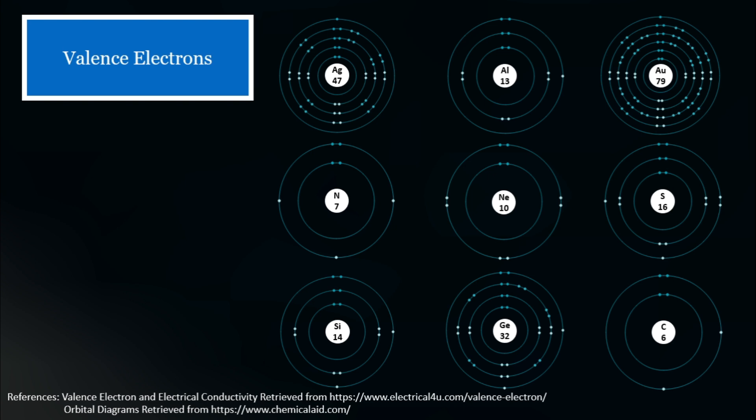Now, shown here are the various planetary model or orbital diagram representation of the electrons of each given element. We have here silver, aluminum, gold, nitrogen, neon, sulfur, silicon, germanium, and carbon.